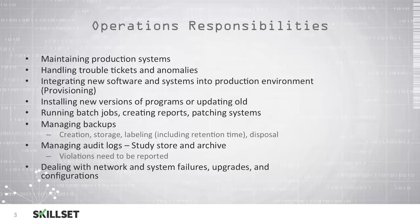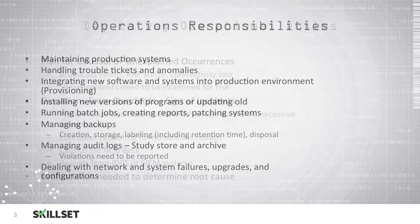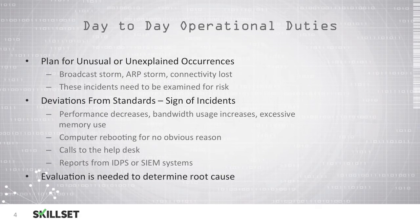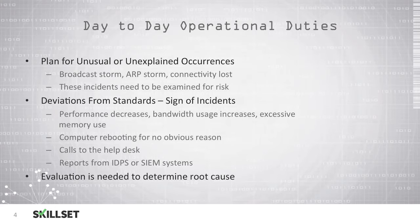They'll also need to deal with any network failures or system failures, upgrades of equipment, and reconfiguring of equipment. It's important to plan for any unusual or unexplained incidents on your network or within your organization. If there's a broadcast storm or an ARP storm, perhaps someone is attempting to attack your network and this should be responded to very quickly. There could be lost connectivity due to a malicious attack or a denial of service attack, or perhaps just because your internet service provider is experiencing issues. You'll need to examine these incidents to determine if there is a risk, or if there is just a technical difficulty with your internet service provider and therefore no further investigation would be needed.